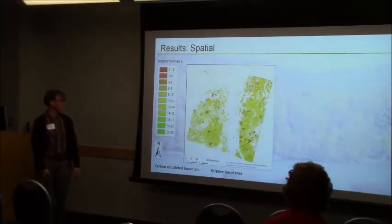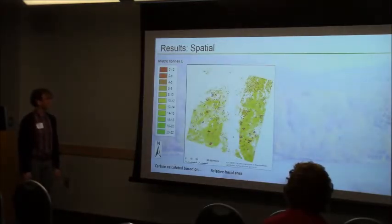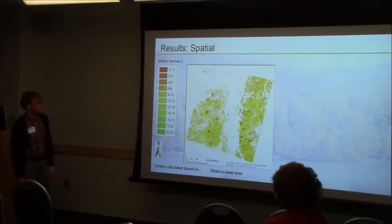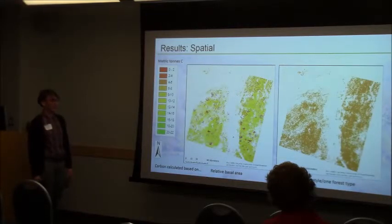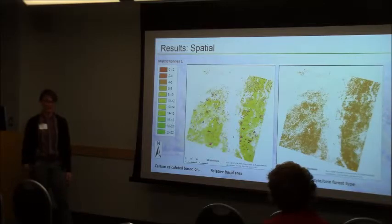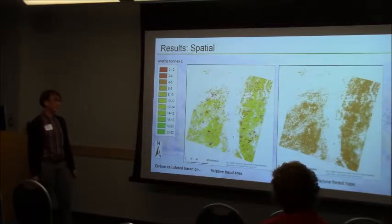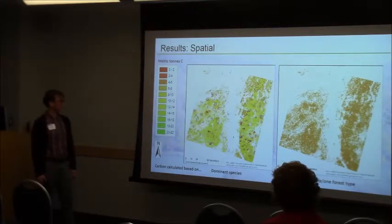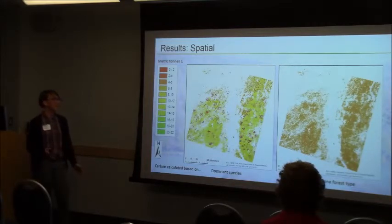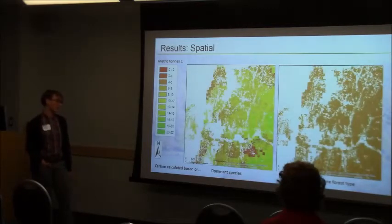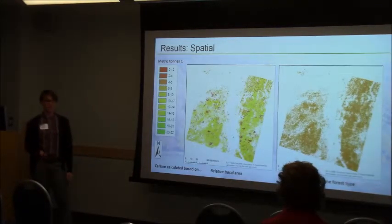Looking spatially at these results: this is a map of relative basal area — bright green is high and red is low. For comparison, if you use one forest type, you get one carbon value across the entire landscape, which is not realistic even for just one single state. The dominant species map is pretty similar spatially — the areas that are low for dominant species are also low for relative basal area, and the high pixels are also high — though the values differ slightly between the two maps.